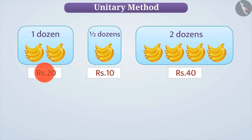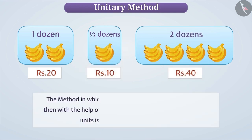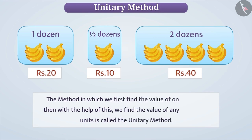For example, if we know the value of one dozen bananas, then we can find the value of half a dozen or of more than one dozen bananas. The method in which we first find the value of one unit and then, with the help of this, find the value of any number of units is called the Unitary Method.